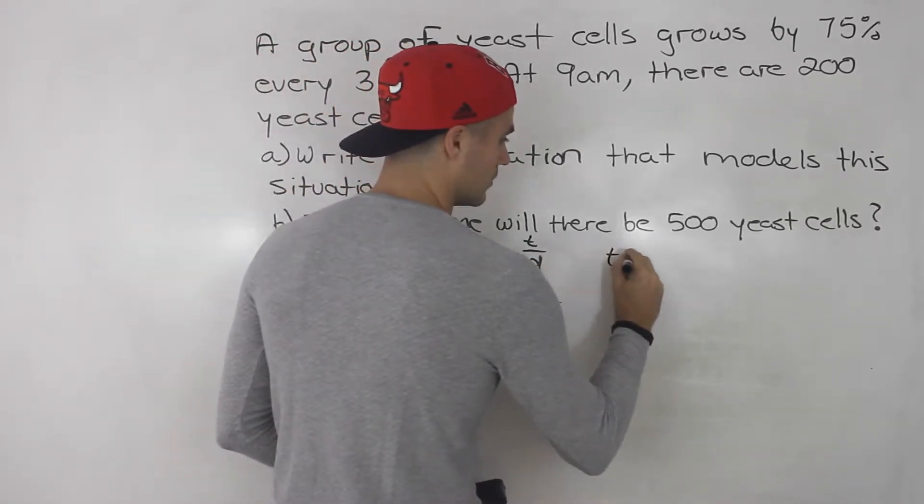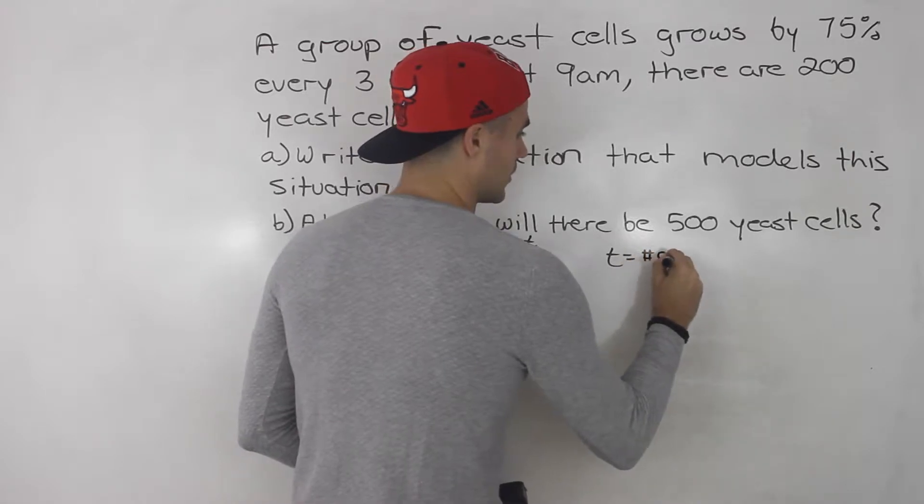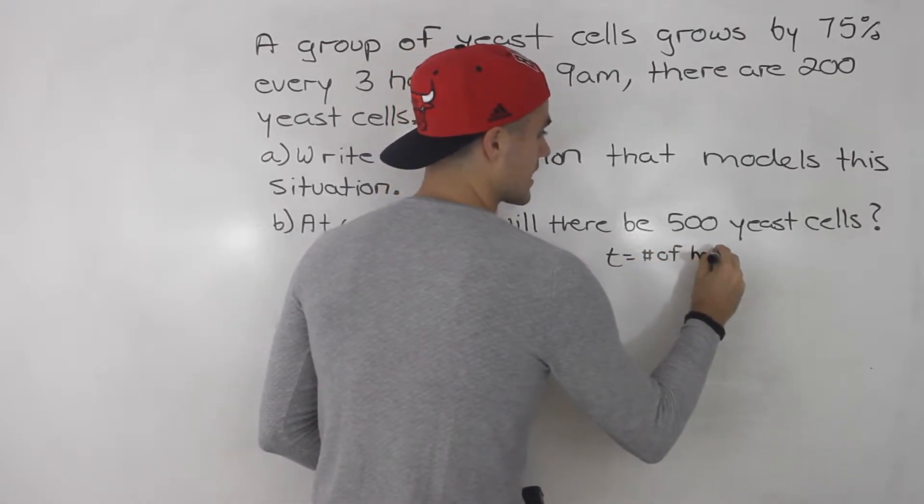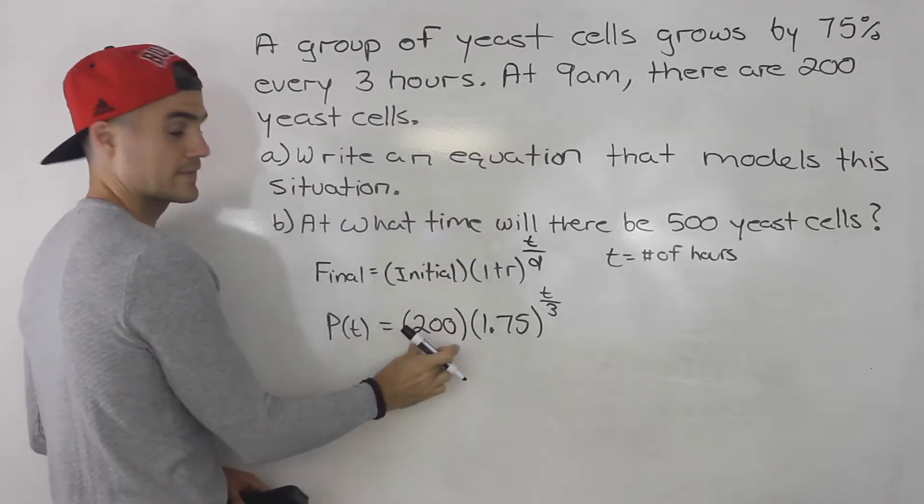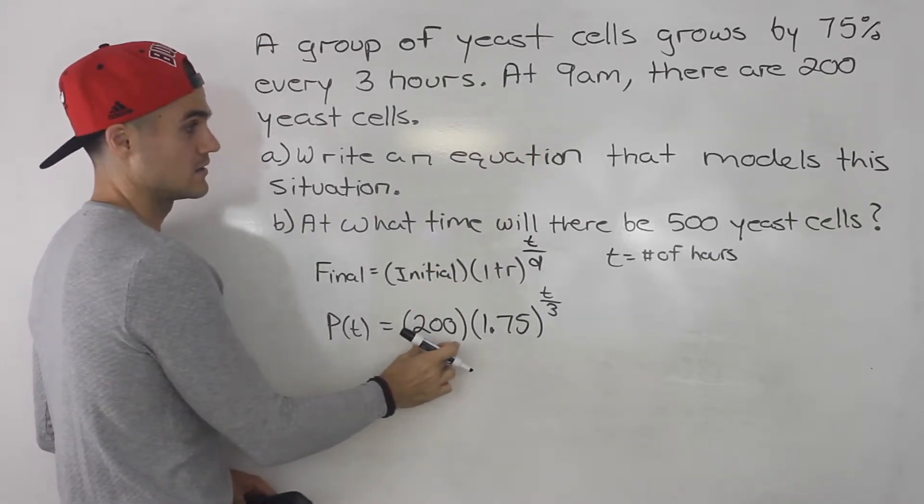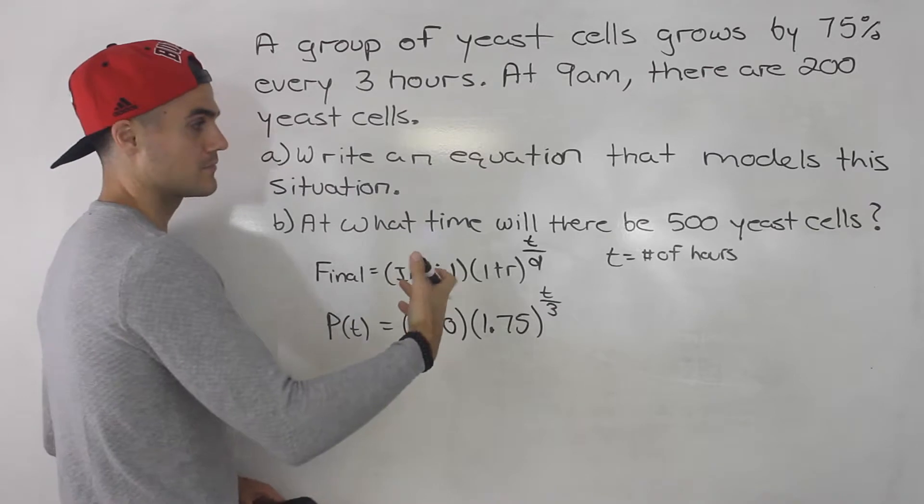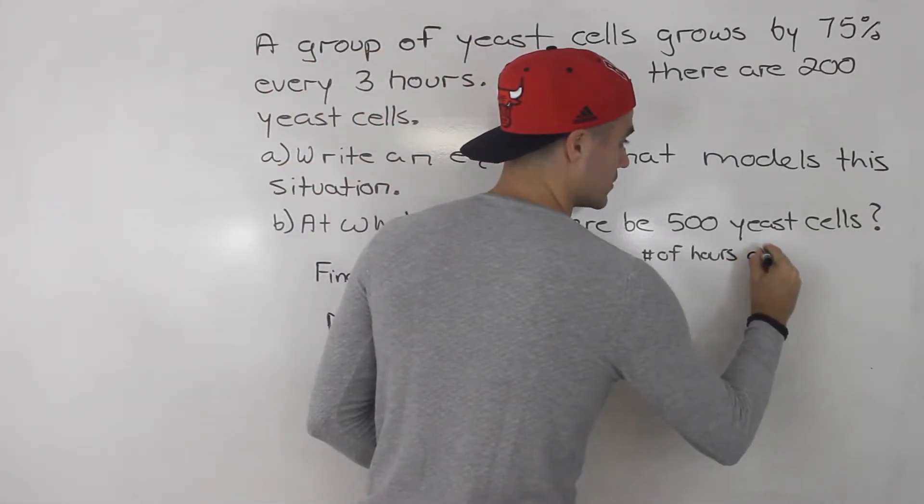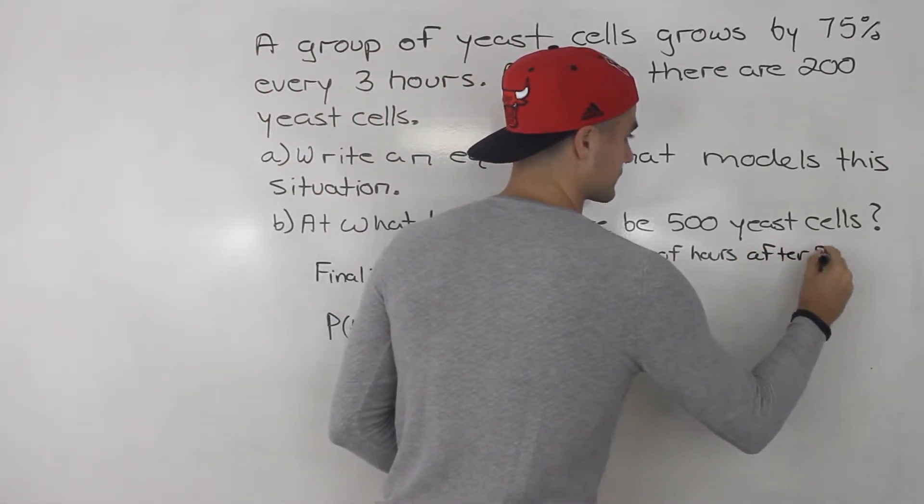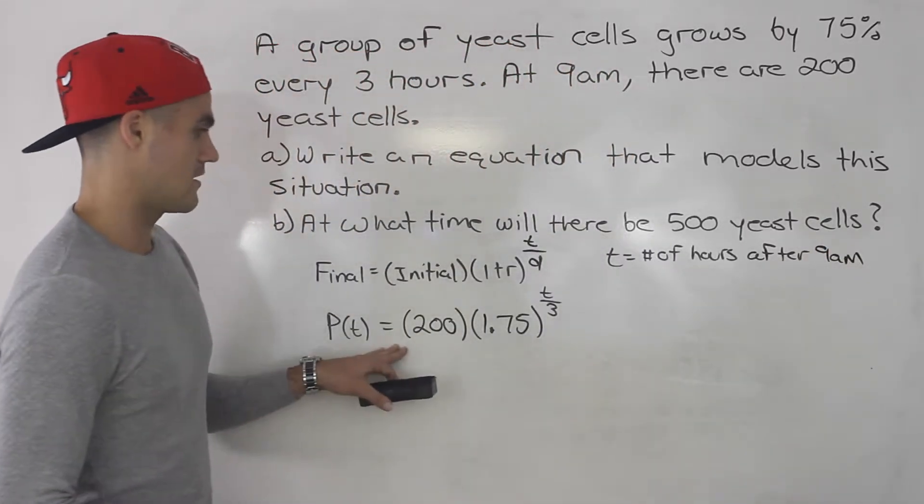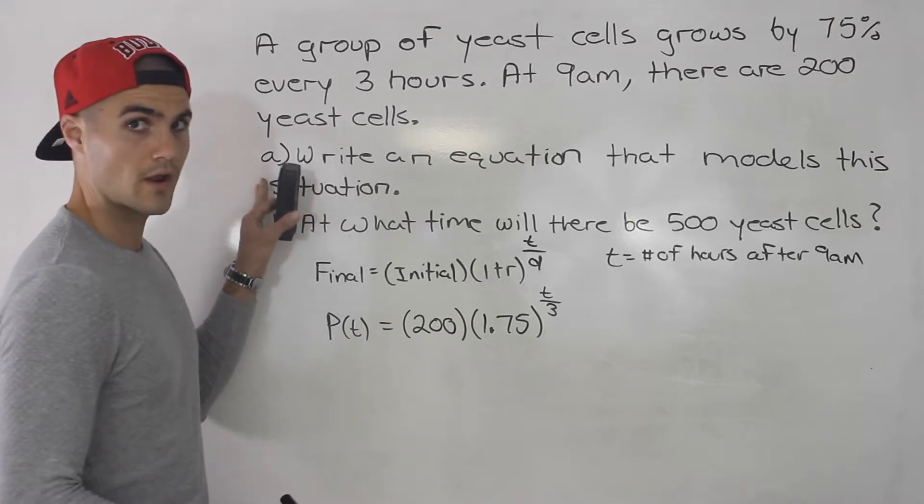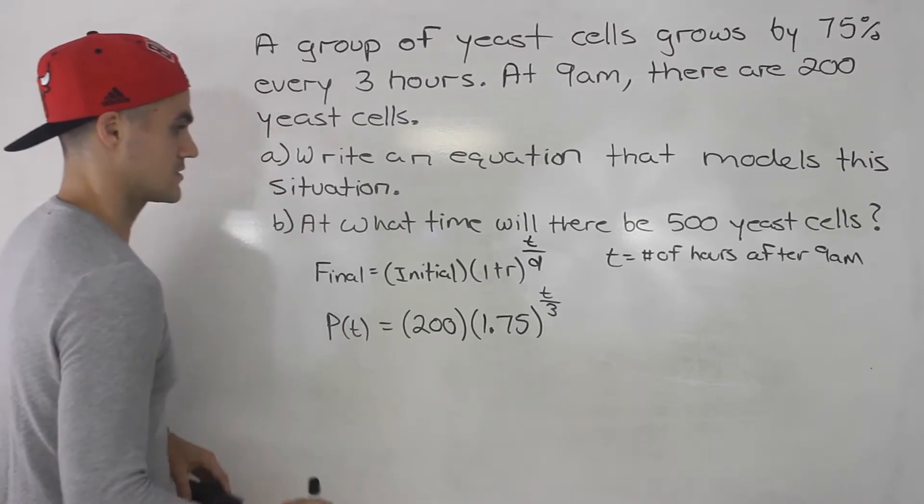And this t variable is the number of hours in this case after what? After 9 a.m., because at 9 a.m. that's when the initial amount is there. So after 9 a.m., t is the number of hours. So that is the equation for part a. That's the answer for part a.